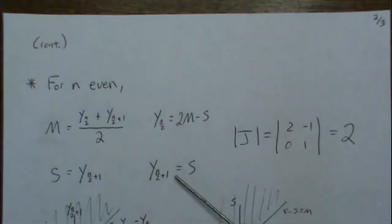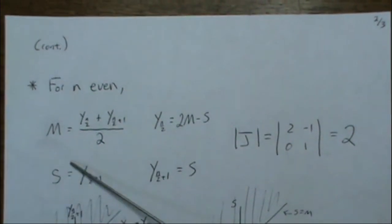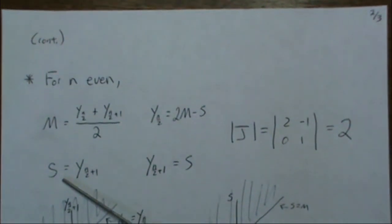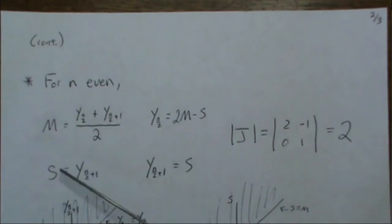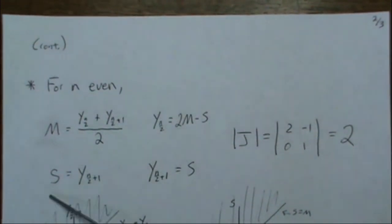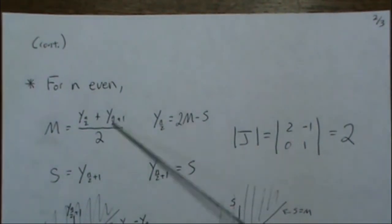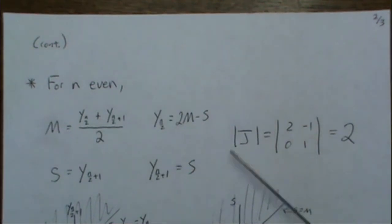And we're going from R2 space, so we have to map to R2 space, so we create a sort of a dummy variable to find the joint distribution between M and S, and then we integrate out S. So in this mapping, the Jacobian ends up being 2.